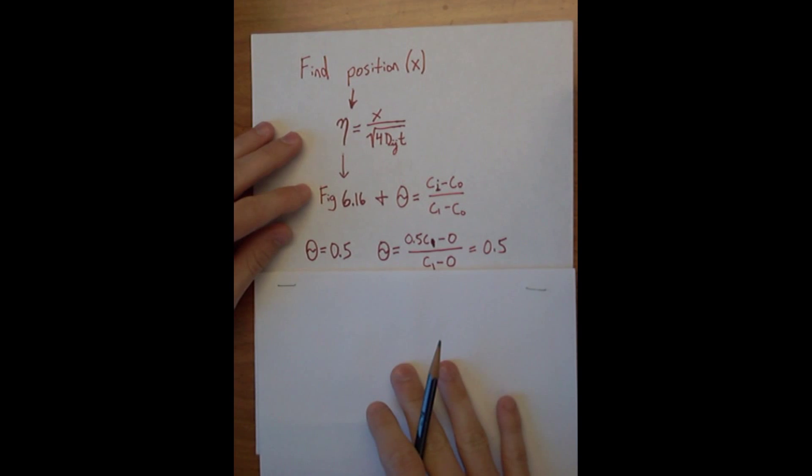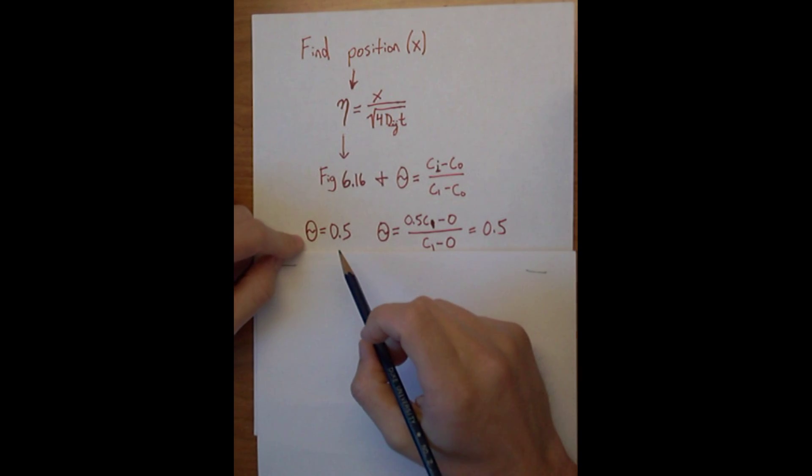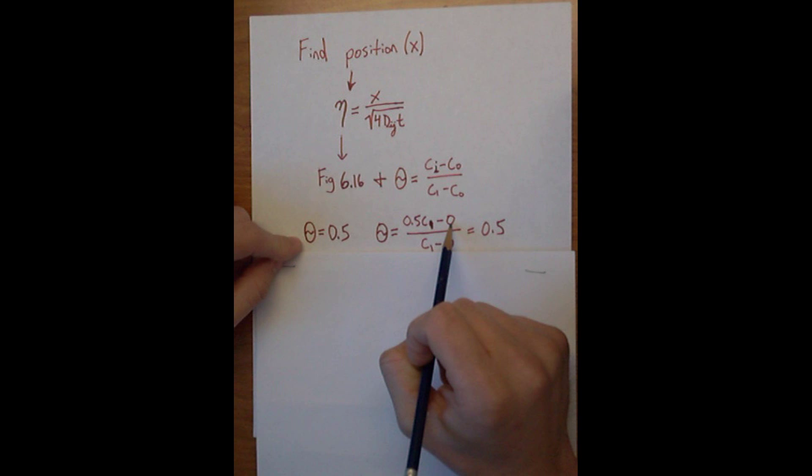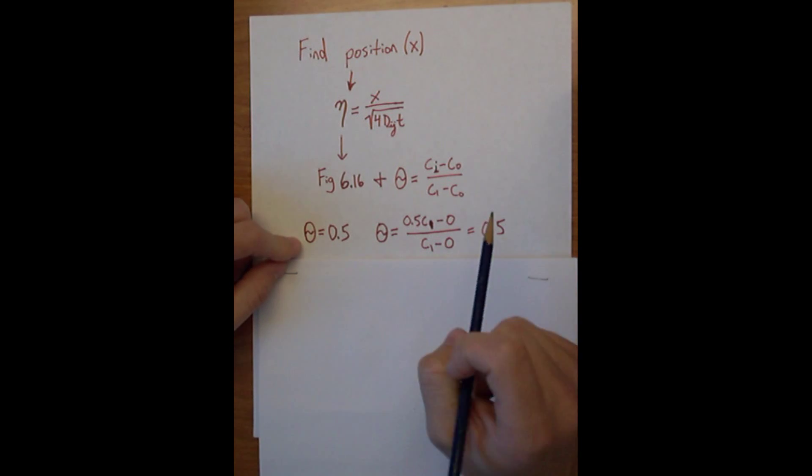So the normalized concentration, from the problem statement, says 50% of the bath concentration. You could understand that it's just 50%, so the normalized concentration would be 0.5. Or you can actually use the equation and see that 0.5 times C1 minus C0, which is the initial concentration in the tissue (0), divided by C1 minus 0. That gives you 0.5.